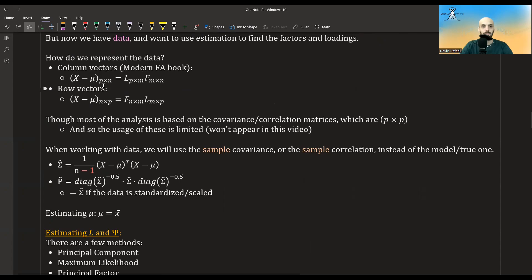This would be a P by N matrix, where P is the dimension of the data and N is the number of observations, and L will be P by M, and F will be M by N.